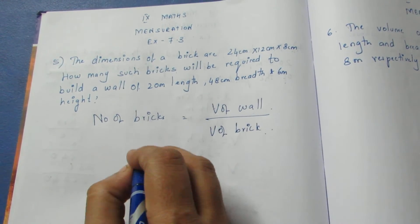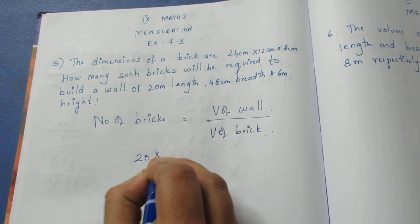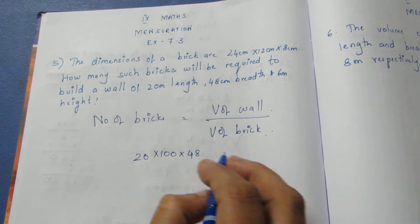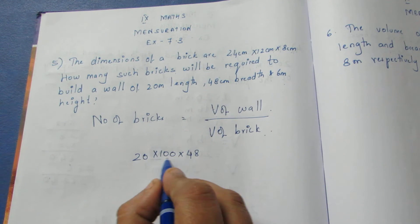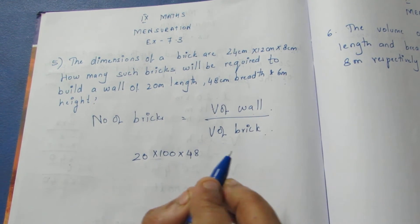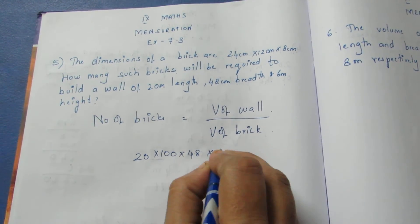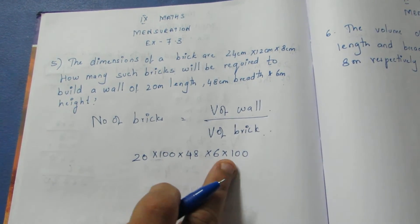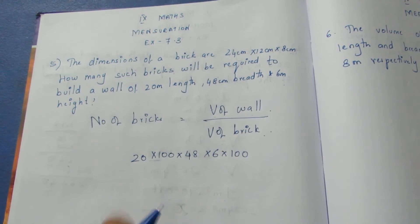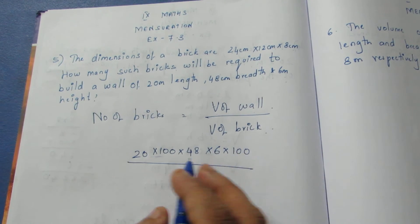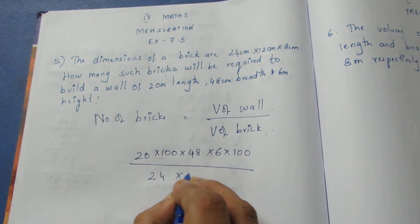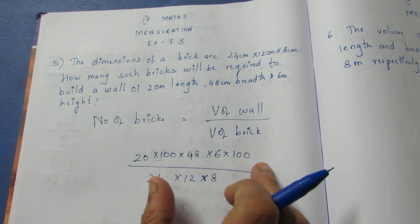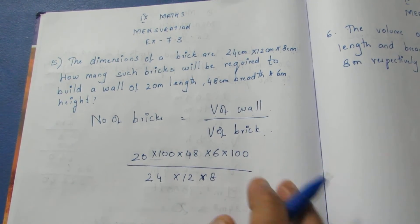The volume of the wall is: length 20 meters (converted) multiplied by breadth 48 cm, multiplied by height 6 meters (converted). Substituting the values into the problem gives us the wall's volume in cubic centimeters.